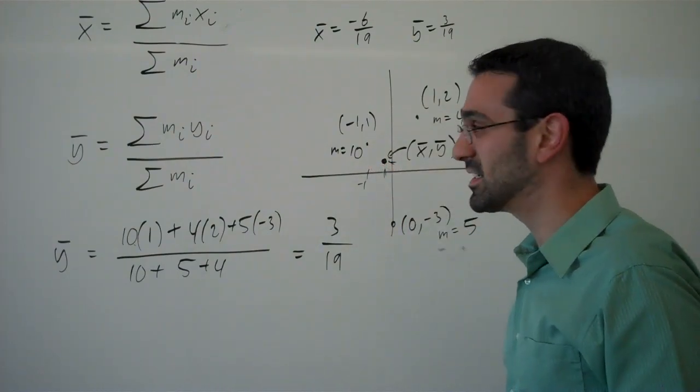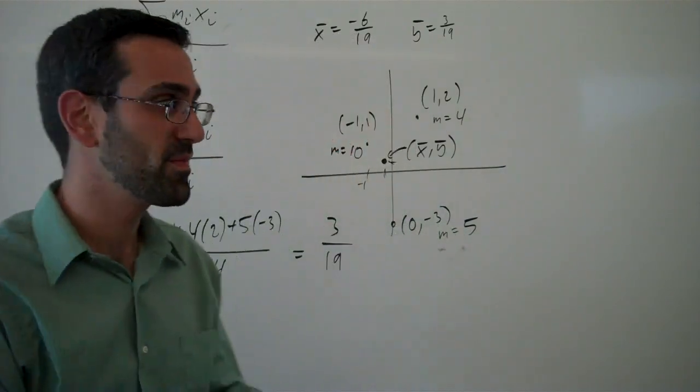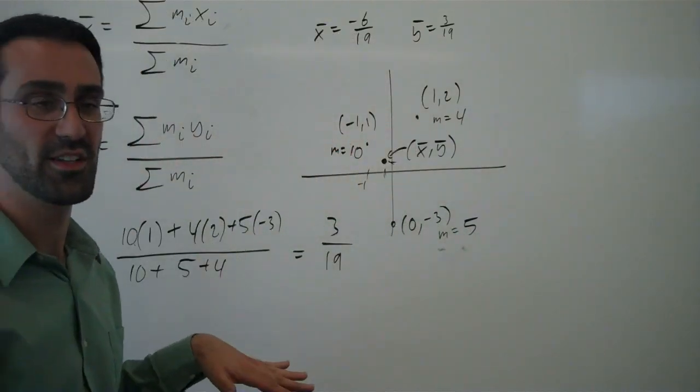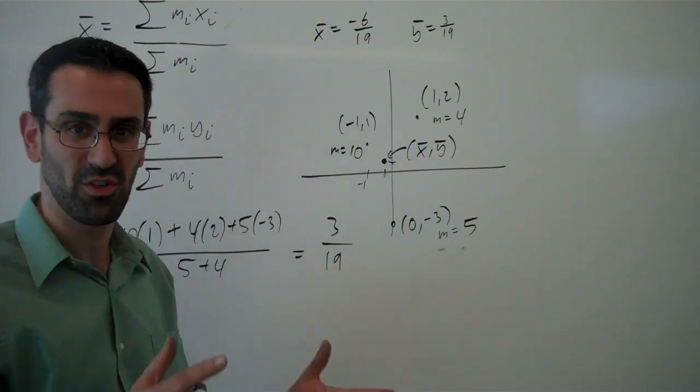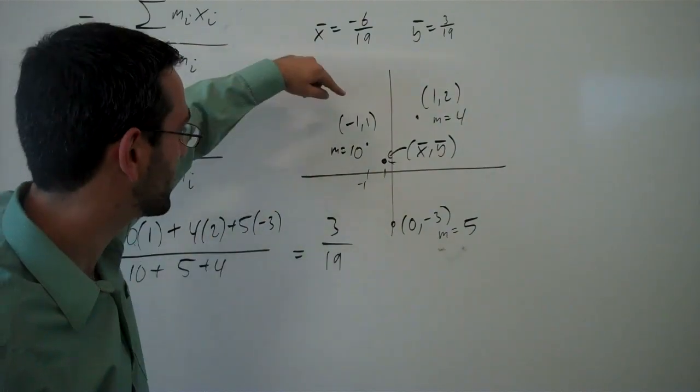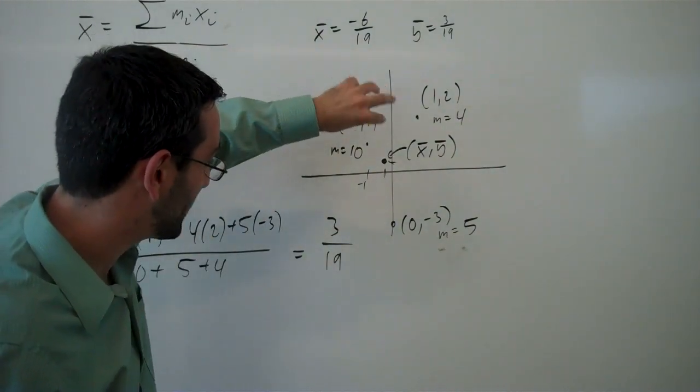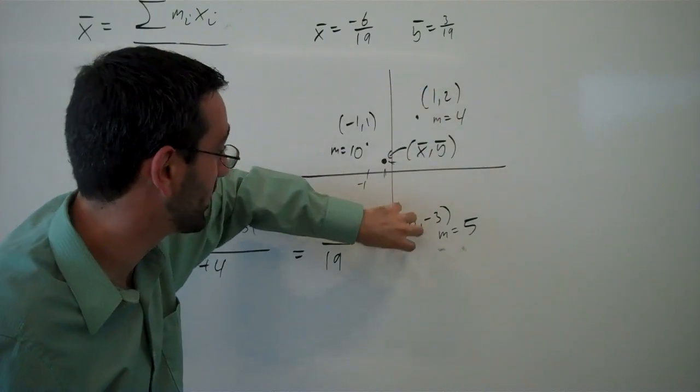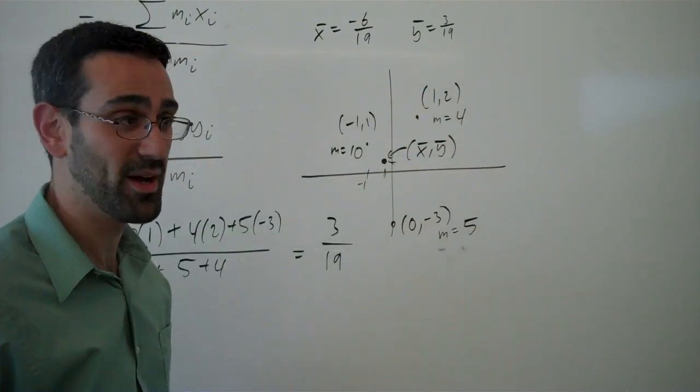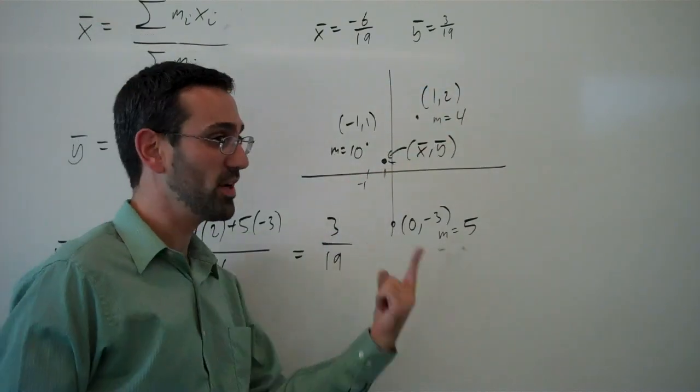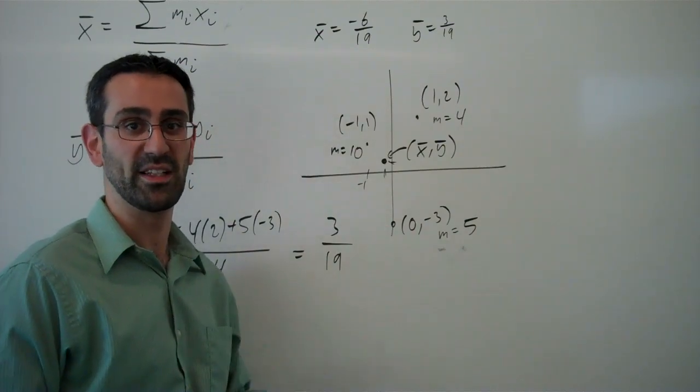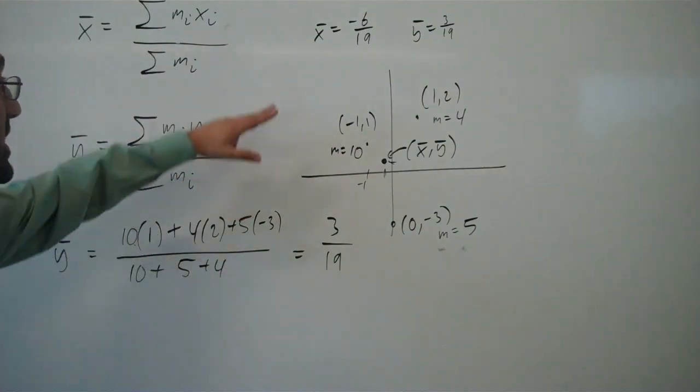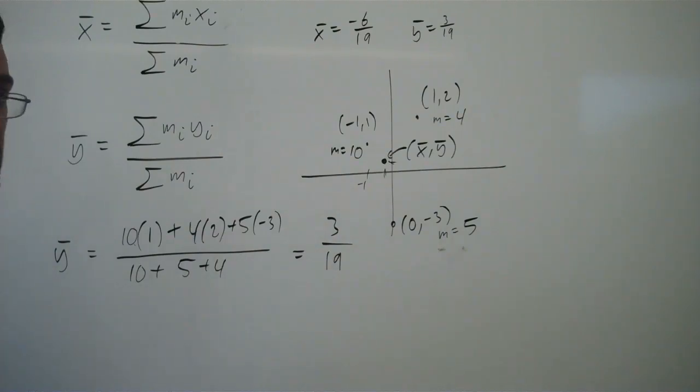A way to imagine this is if I had a sheet of very lightweight cardboard, sort of imagine that it didn't affect things, and we put masses here, here, and here with those corresponding masses, then this would be the point where I could stick my finger and get those masses to balance. And that's how we find center of mass for a set of point masses.